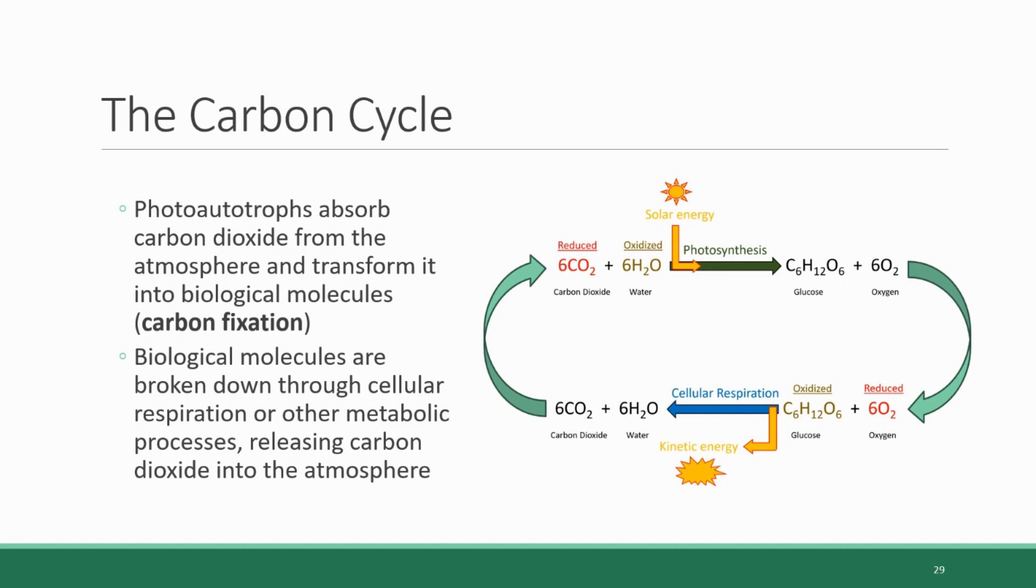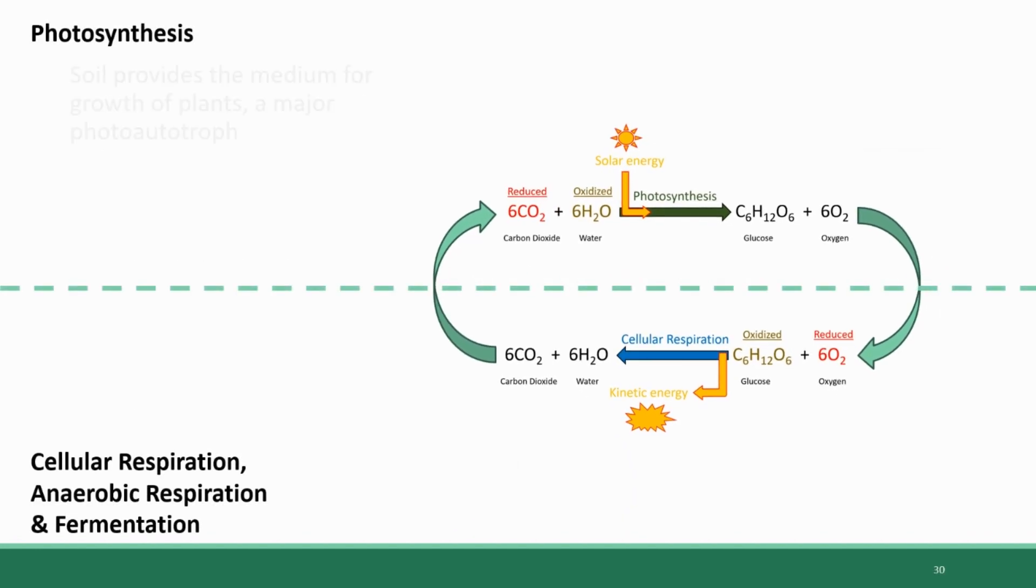So how does the carbon cycle relate to soil? Well, the soil provides the medium for plant growth, and plants are a major player in the half of the cycle that involves carbon fixation, along with their aquatic photoautotroph cousins, algae and cyanobacteria. So soil provides the foundation for plants to absorb carbon.